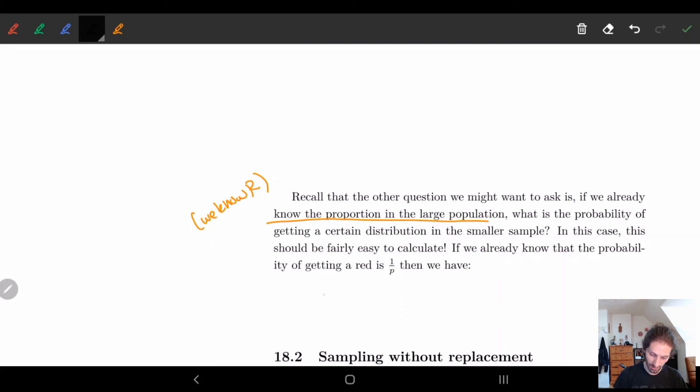So the way to get this probability is P, we want to get little r red out of n poles. And this is n choose r, P to the r, 1 minus P to the n minus r. And so this is a chance of getting r things in n poles.